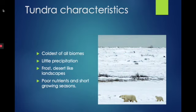There is very little precipitation. Annually this biome receives between 15 and 25 centimeters, and this includes the melting snow. There is a lot of frost and a desert-like landscape. The nutrients in the soil are poor, which makes for very short growing seasons.